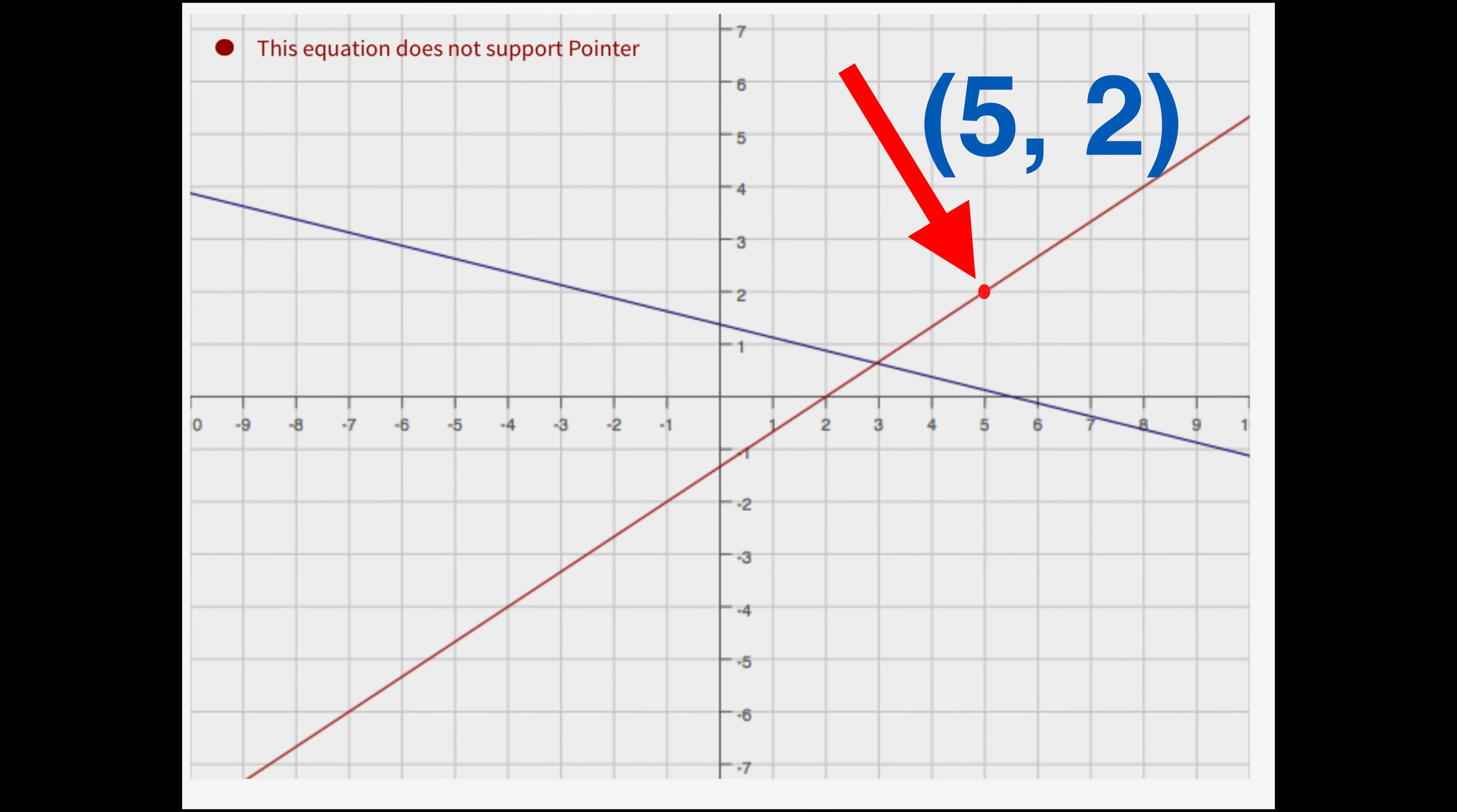So when we're referring to points being solutions or not, that's what we mean. Does this point exist on both lines? As you can see, in this case it does not, so it is not a solution for both. It has to be a solution for both systems of equations, not just one. Good luck in your study.